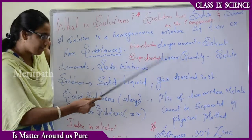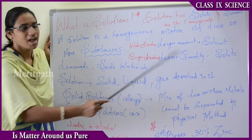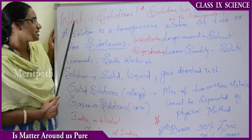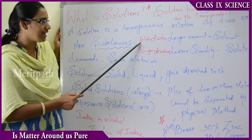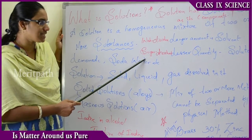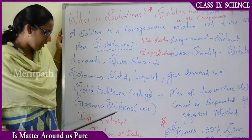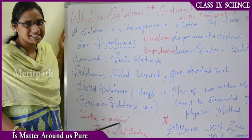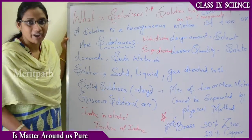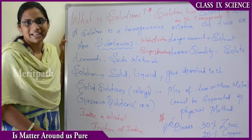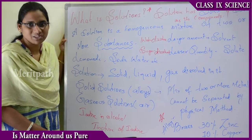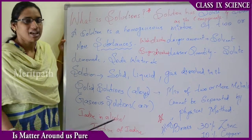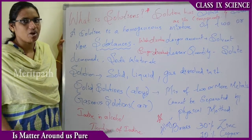Water is the solvent and sugar is the solute. In iodine dissolved in alcohol, iodine is in lesser quantity so it is the solute, and alcohol is in larger quantity so it is the solvent. This solution — iodine in alcohol — is known as tincture of iodine.